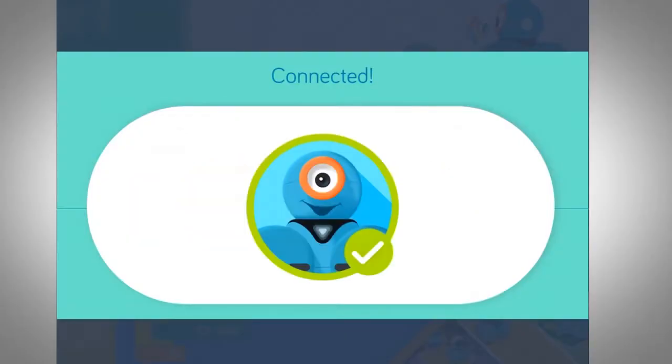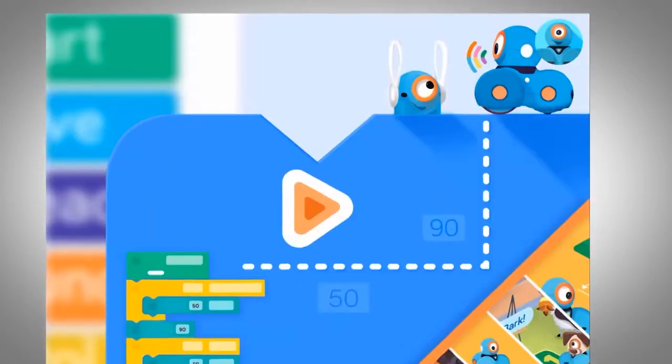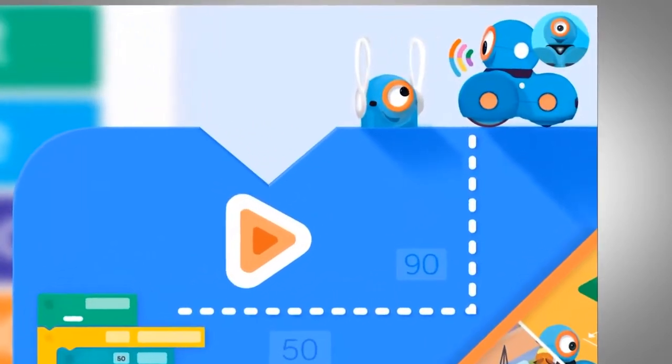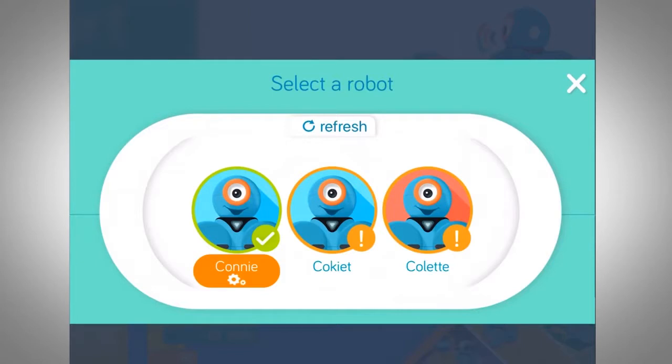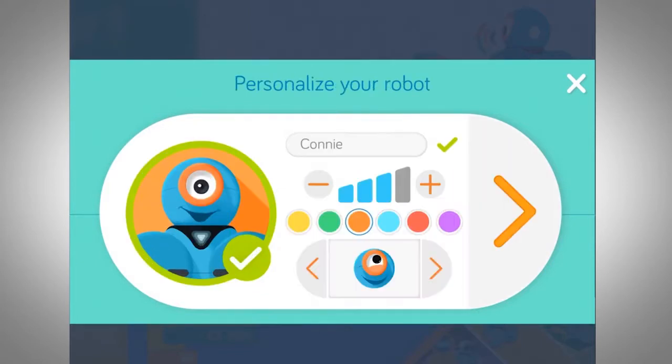Once Dash is connected, click the profile picture on the top right and then the orange settings button. Choose a particular color and you'll notice that the lights on the side of his head will turn that color. That's how students will know which Dash they are using.